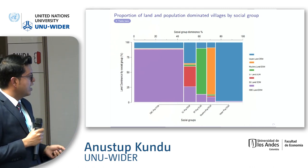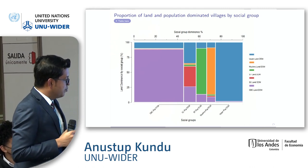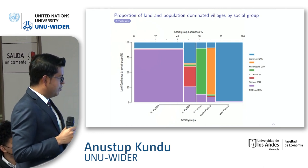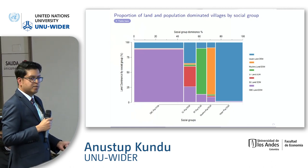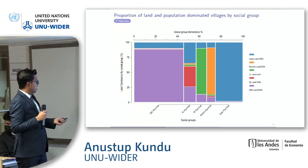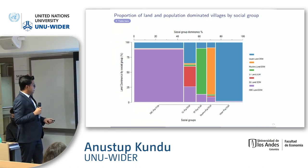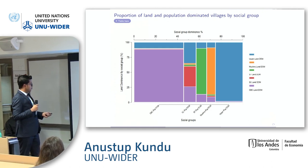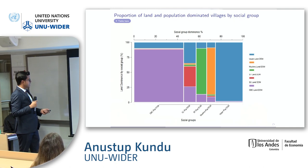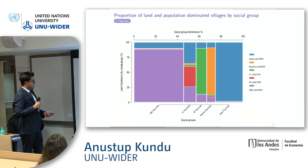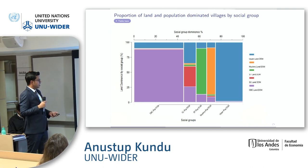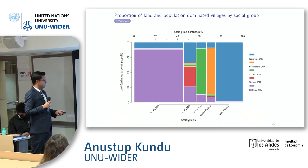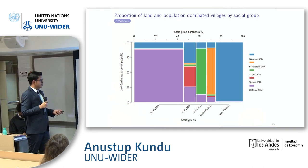Here is an interesting plot. One axis shows which group is dominant by population, another shows land dominance, and the third shows percentage. We see that OBCs, where they are population dominant, are also land dominant. The same holds for upper caste, Muslims, and Scheduled Tribes as well, but not so much for Scheduled Caste. So there's a lot of variation here.